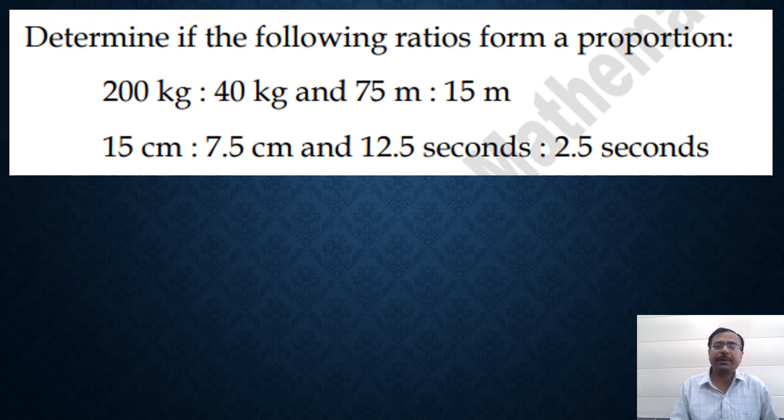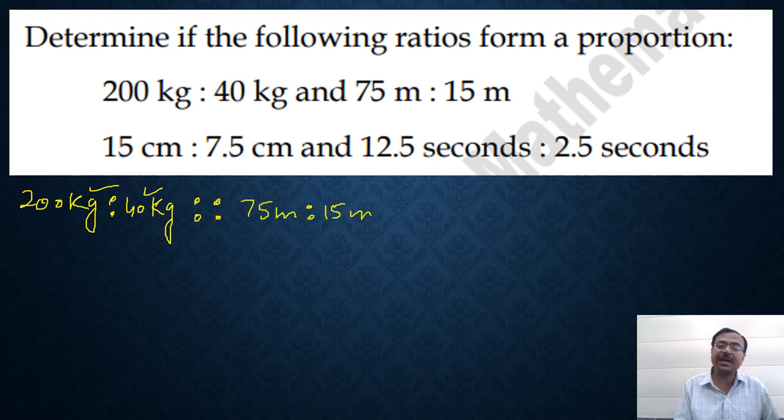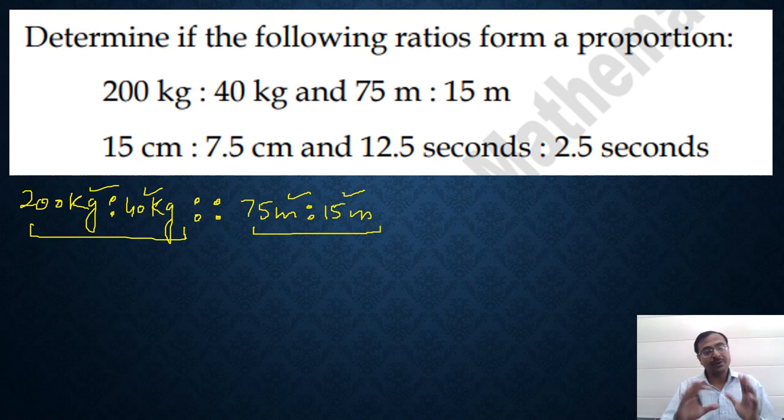Determine if the following ratios form a proportion. Now, here also the same thing goes but the unit conversions come into play here. 200 kg and 40 kg. See, the unit is same here, right? Whereas the other part, 75 meters and 15 meters is also same unit. Whenever in one ratio you have the same units and the other ratio also, the two terms have the same unit, then you do not need to go for any conversions. But in case there was a kilogram here and a gram here, then first thing is to equate the two units and then go for the product of extremes and the product of means.